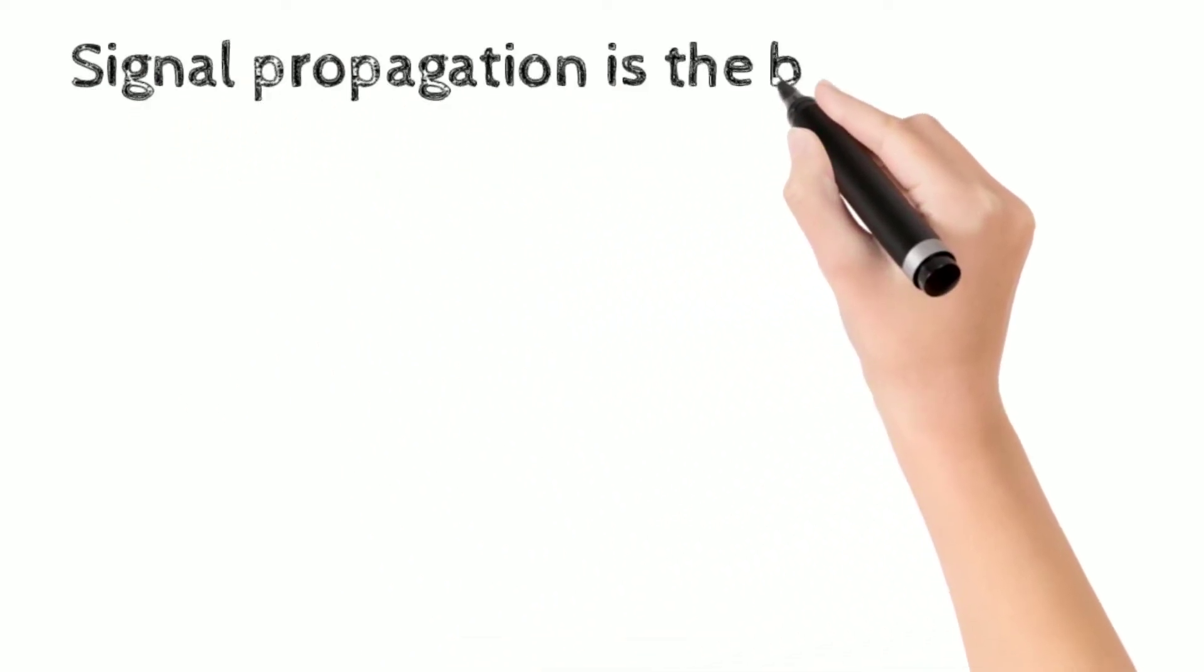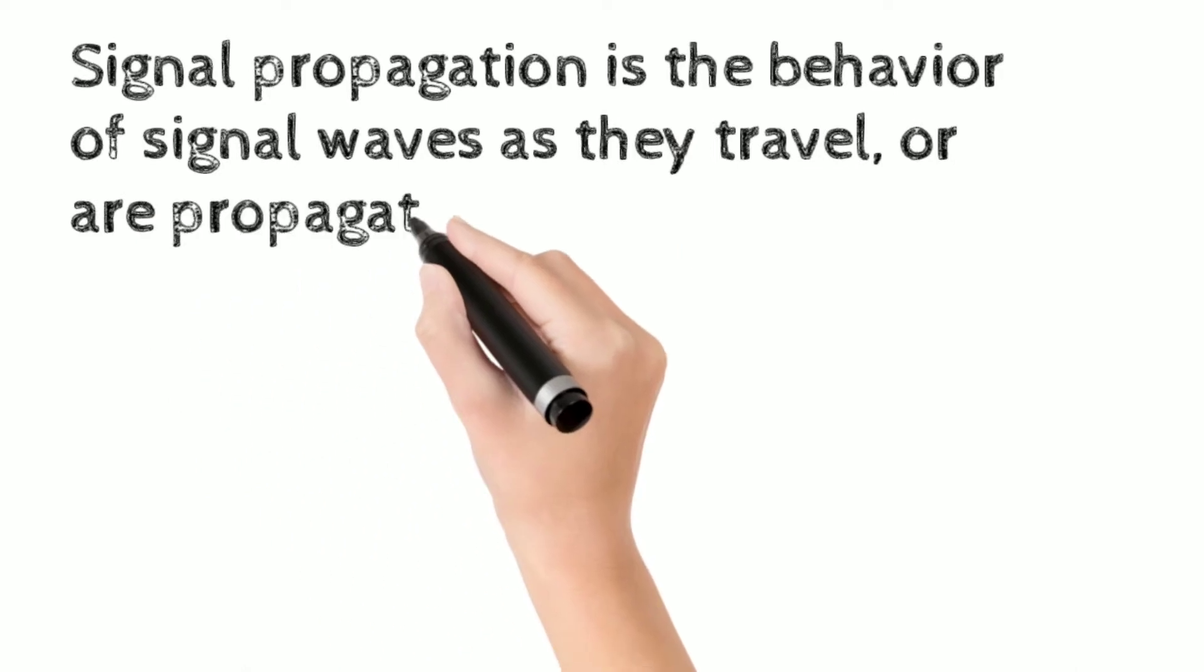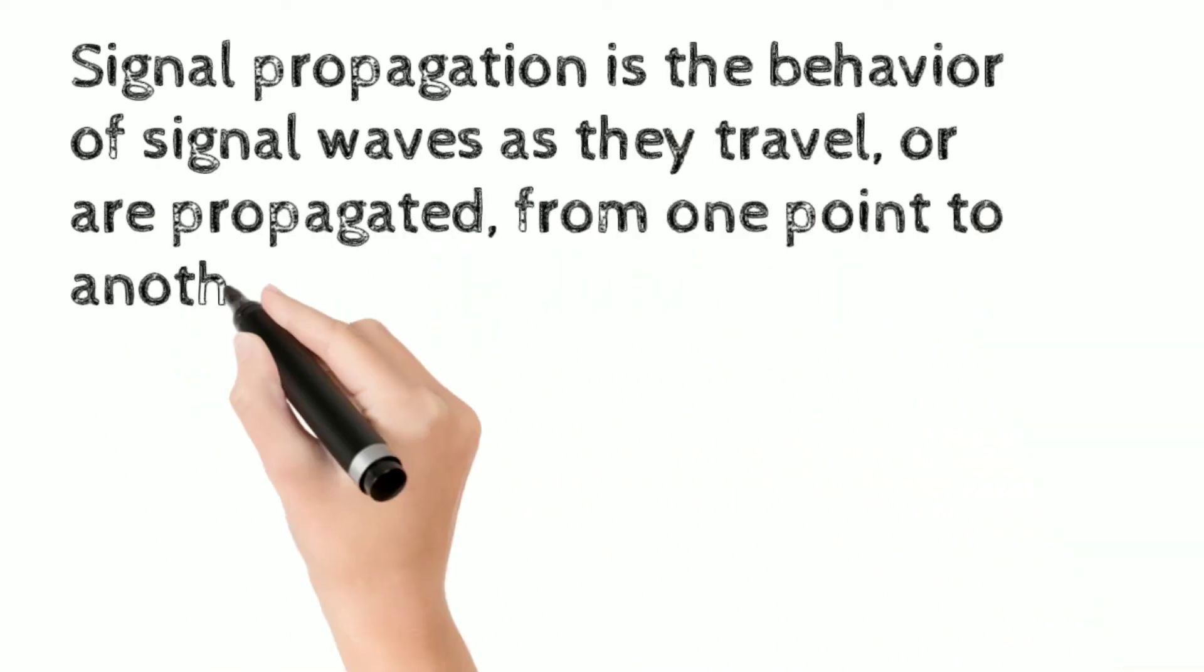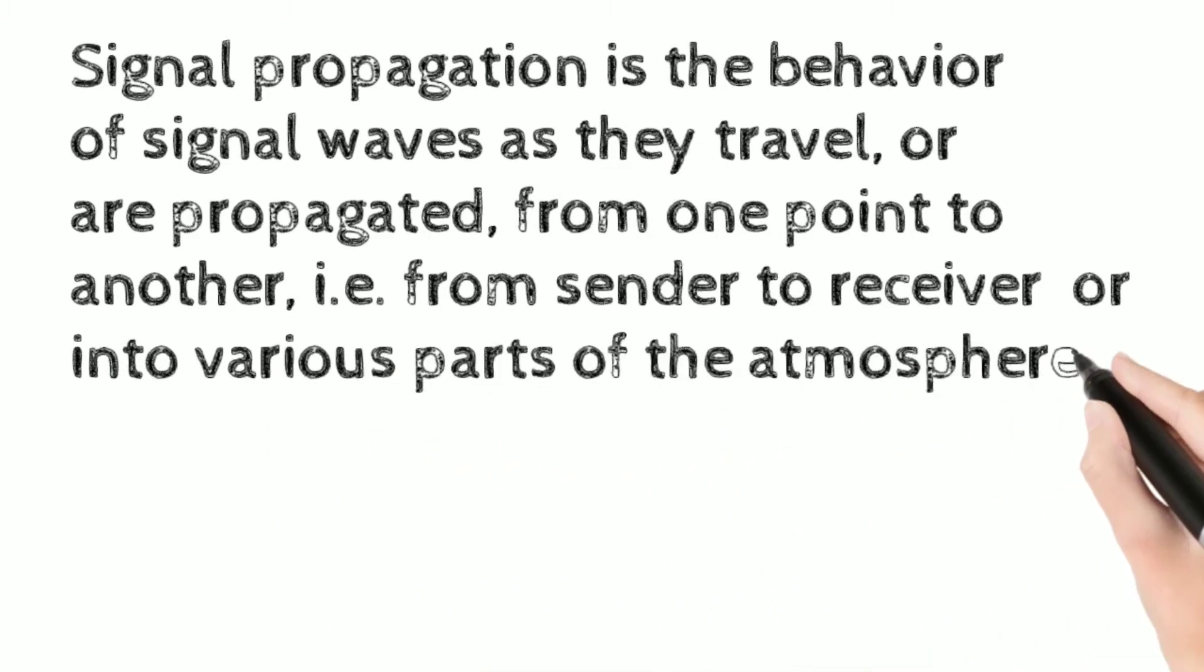Signal propagation is the behavior of signal waves as they travel or are propagated from one point to another, i.e., from sender to receiver or into various parts of the atmosphere.